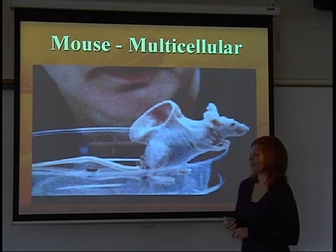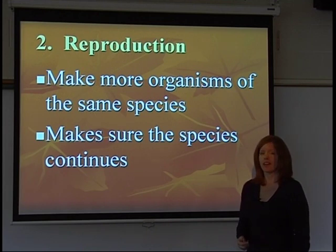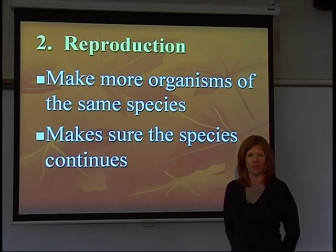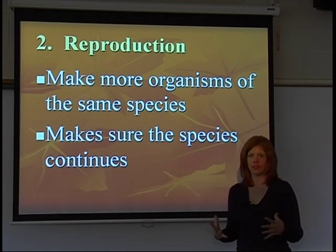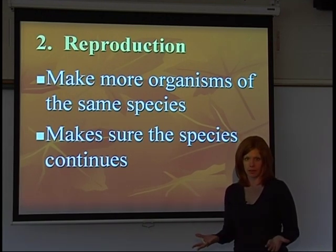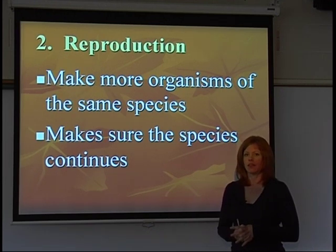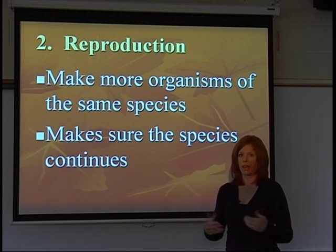A second characteristic of living things is that all living things are able to reproduce, which means they're able to continue the species. For example, the human species has to have some members that can reproduce, otherwise we would become extinct. Even though there may be some exceptions where somebody is unable to reproduce, it doesn't mean they are not a living thing — it is really looking at the species level, so that the species does not die out.